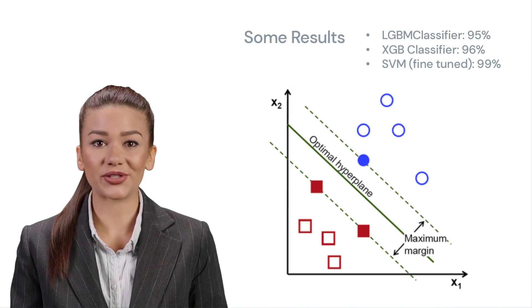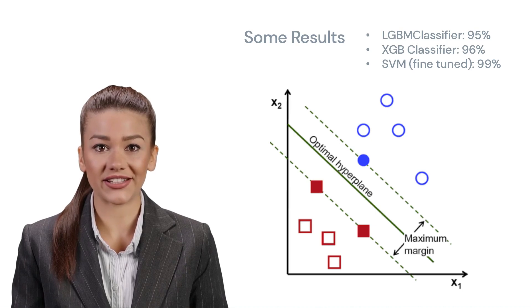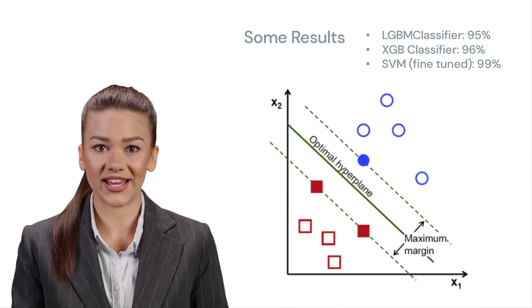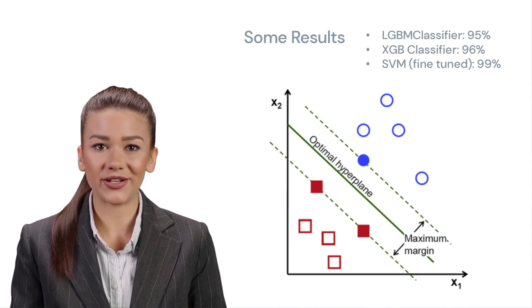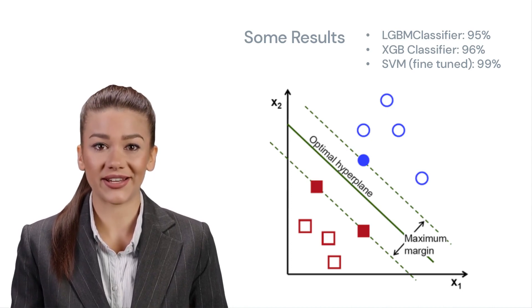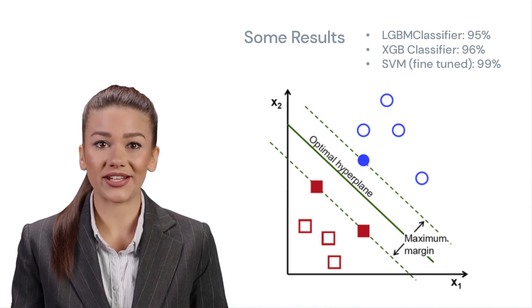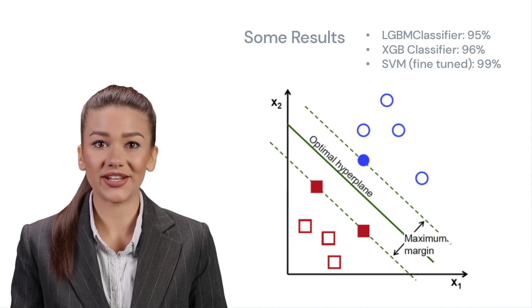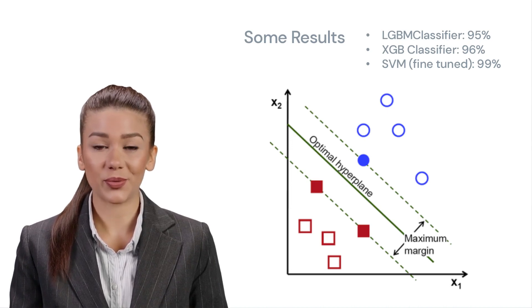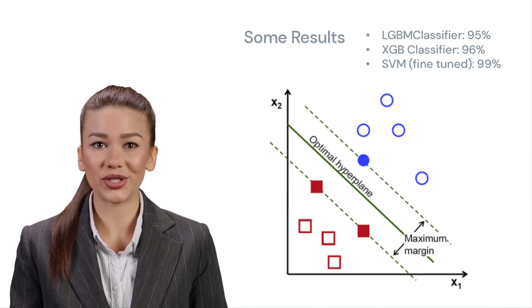What are support vector machines? Imagine you have a big box of toy cars and toy airplanes, and you want to separate them into two different piles. You could draw a line on the floor between the two piles to show which side the cars are on and which side the airplanes are on. A support vector machine is like an imaginary friend who helps you draw that line, but they're really good at it. They find the best possible line that separates the cars and airplanes while keeping the biggest space between them. This way, it's easier to tell which toy belongs to which pile. So, when you get a new toy, you can quickly figure out if it's a car or an airplane by looking at which side of the line it's on.